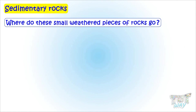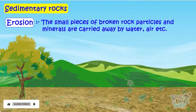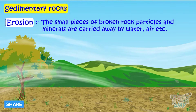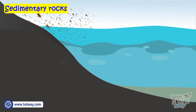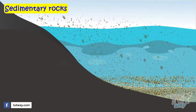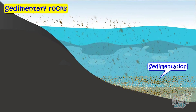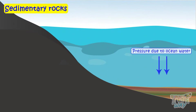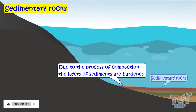And where do these small weathered pieces of rocks go? Erosion. These small pieces of broken rock particles and minerals are carried away by water and air, and this carrying away of small pieces of rocks is called erosion. Due to erosion, the small pieces of rocks reach water bodies and settle down in the beds of water bodies. This is called sedimentation. Many layers of sediment accumulate over the passage of years, and under the pressure of sea water, a process called compaction occurs, and the layers of sediments are hardened to form sedimentary rocks.